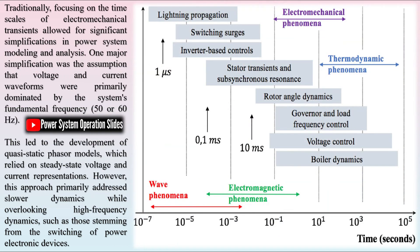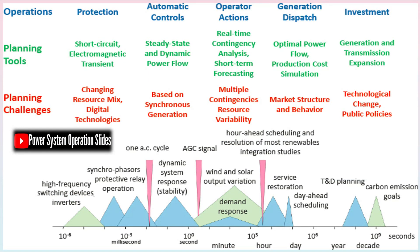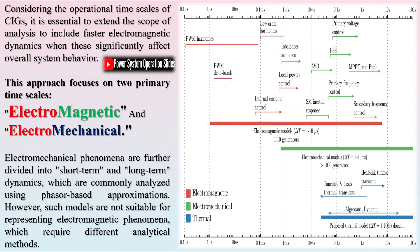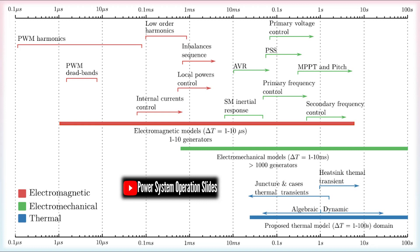Below is a list of five power system stability categories along with a brief explanation for each. Frequency stability focuses on the system's ability to maintain steady frequency levels when there is an imbalance between generation and load. Rapid deviations or prolonged frequency excursions can trigger protective relays and lead to broader outages. Voltage stability involves maintaining acceptable voltage levels throughout the grid, ensuring that the system can accommodate variations in reactive power demand without causing a voltage collapse.